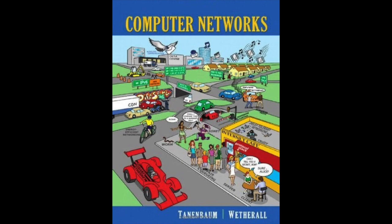Section 6.2.4 covers error control and flow control. Having examined connection establishment and release, we now look at how connections are managed while they are in use. The key issues are error control—ensuring that data is delivered with the desired level of reliability, usually that all data is delivered without errors—and flow control, which keeps a fast transmitter from overrunning a slow receiver. Both of these issues came up when we studied the data link layer, and the solutions used at the transport layer are the same mechanisms studied in chapter 3.